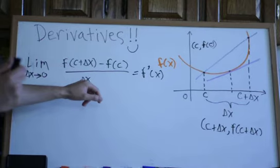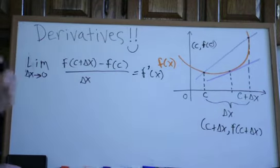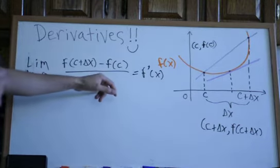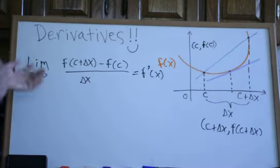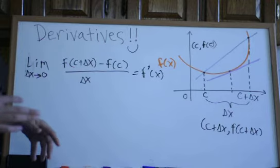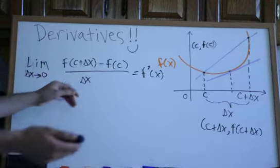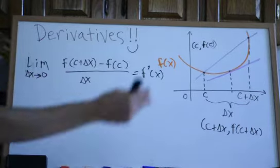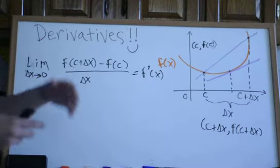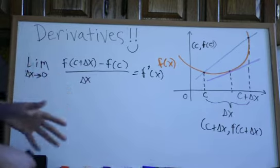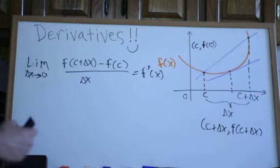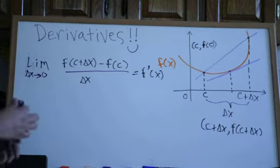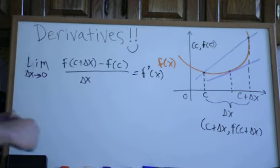If the values keep getting smaller, that gives us the instantaneous rate of change. Imagine starting at delta x equal to 10, then 9, 8, 7, 6, 5, 4, 3, 2, 1, then less than a second — much much less than a second, but not zero seconds. That's basically an instant, an extremely quick point in time, and that gives us f prime of x. That was a basic recap of the last video.